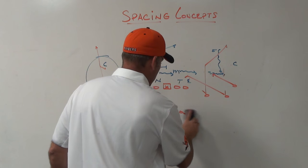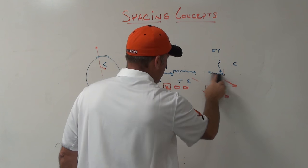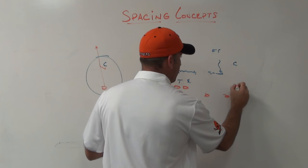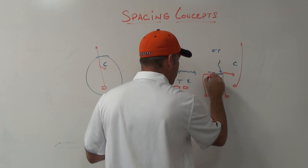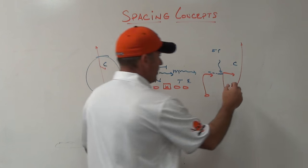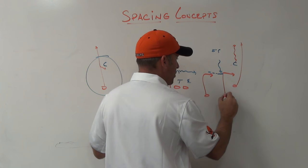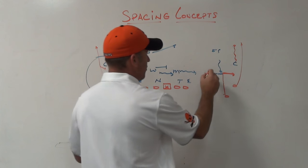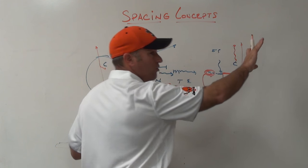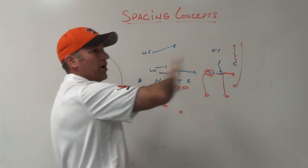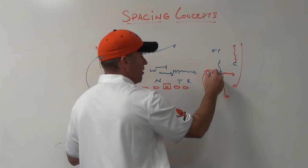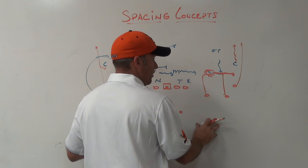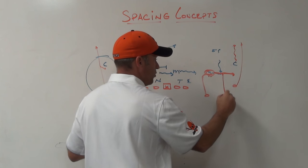Without releasing the back, a good one against this type of coverage is a vertical by one and then double out cuts by two and three. If you can get the corner to push vertical four or five steps into the out cut — so the corner doesn't drive the out if it's that two-read coverage — now you're putting the Sam in a bind and making the Mike run to the throw. Instead of bringing the snag or spot back to the Mike, you're bringing it away from him. If the Sam pushes to the first out cut or tries to get underneath it, you have the other out cut. If the Sam just hangs in the window between two and three, you should get this out cut.